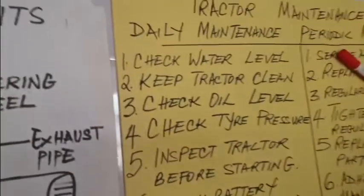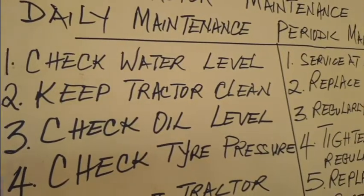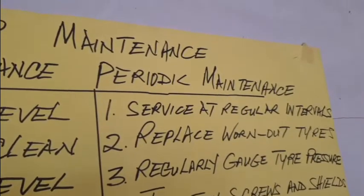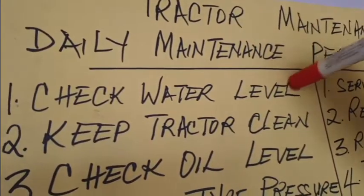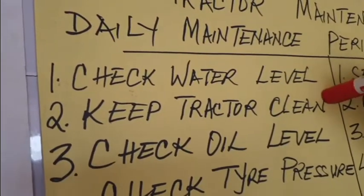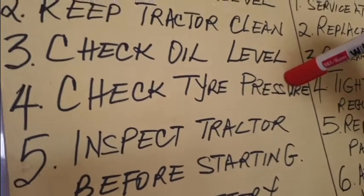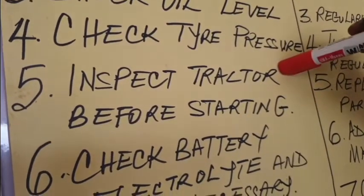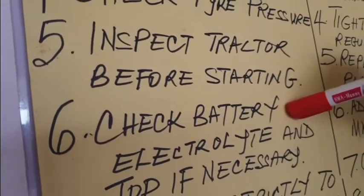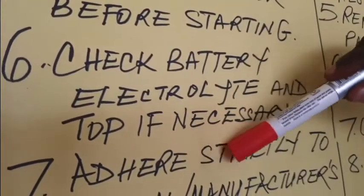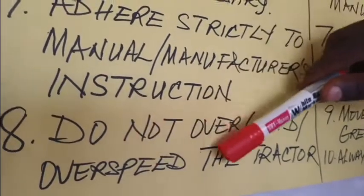Now we come to tractor maintenance. There is daily maintenance and periodic maintenance. The daily maintenance operations you carry out every day before taking the tractor out include: check the water level in the radiator, keep the tractor clean, check oil level, check tire pressure — if deflated, inflate it — inspect the tractor before starting, check battery electrolyte and top it if necessary, adhere strictly to the manufacturer's instructions, and do not overload or overspeed with the tractor.